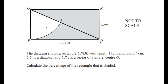Hello and welcome to my channel. In this video we are going to solve an example on mensuration. The diagram shows a rectangle OPQR with length 11 centimeters and width 4 centimeters. OQ is a diagonal and OPX is a sector of the circle with center O, so the center of the circle is at point O, and OPX is a part of the circle — it is a sector.